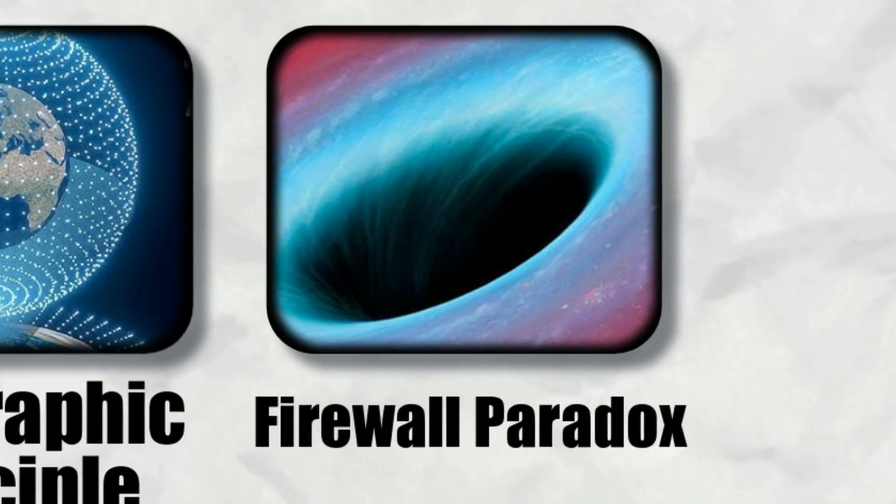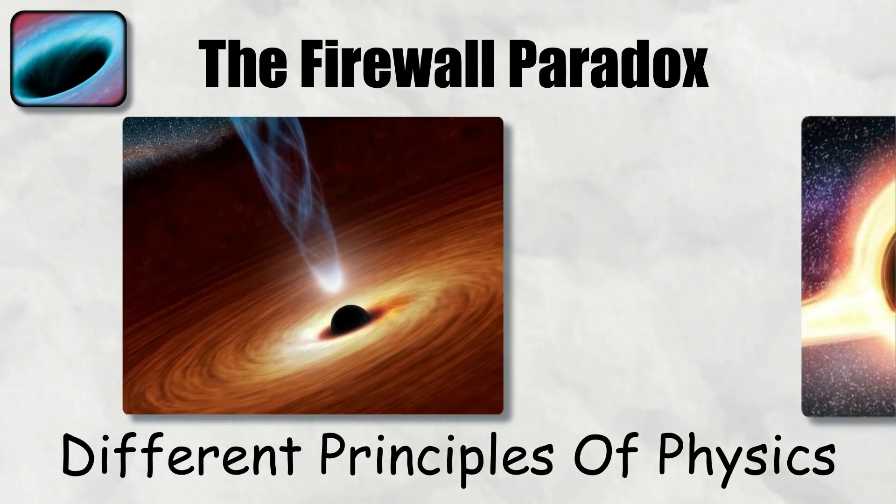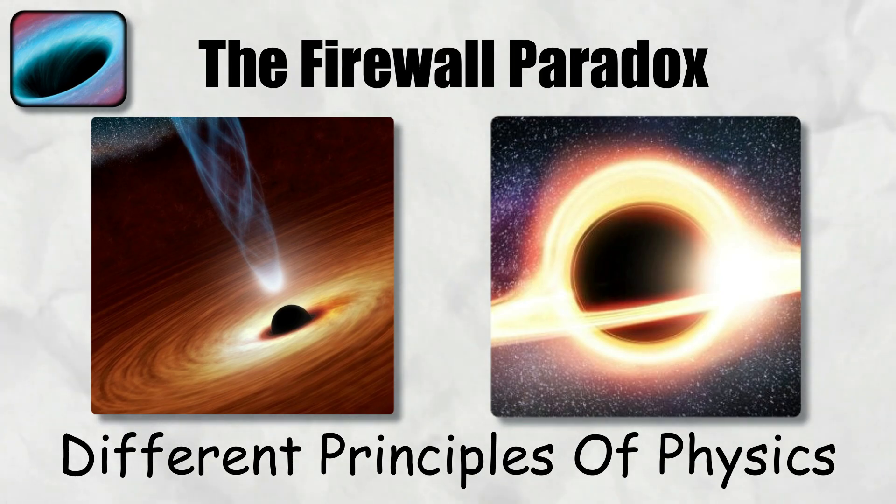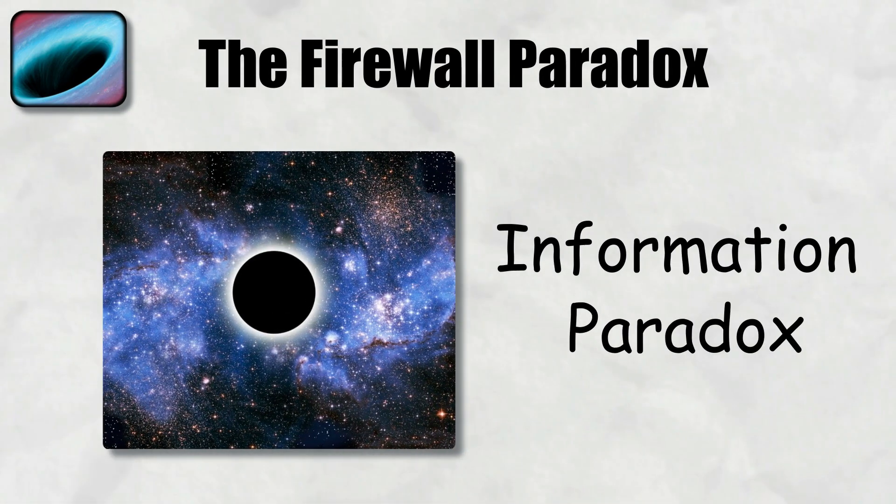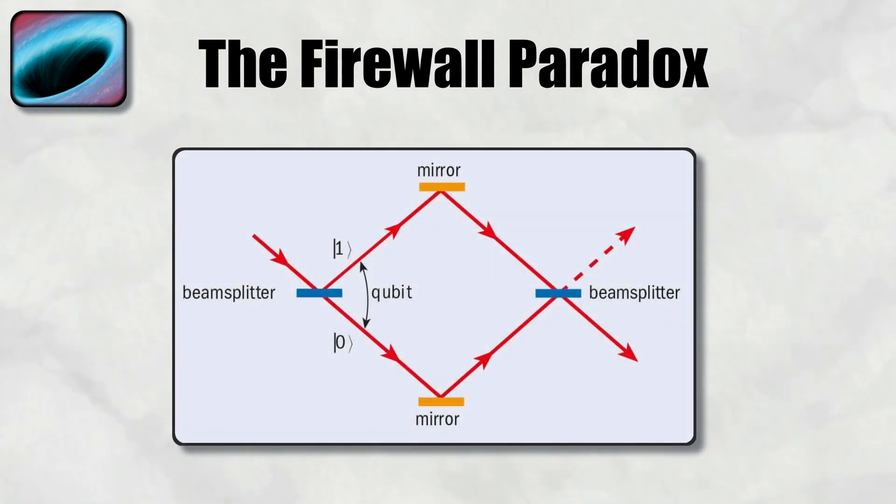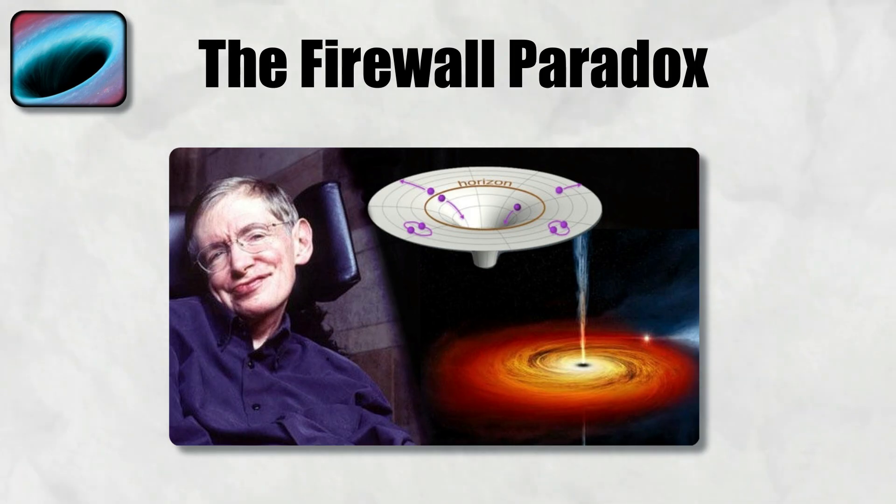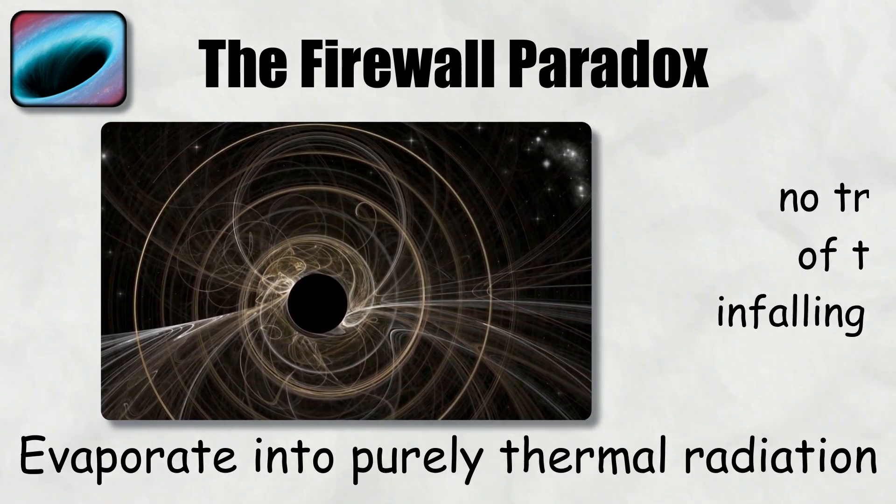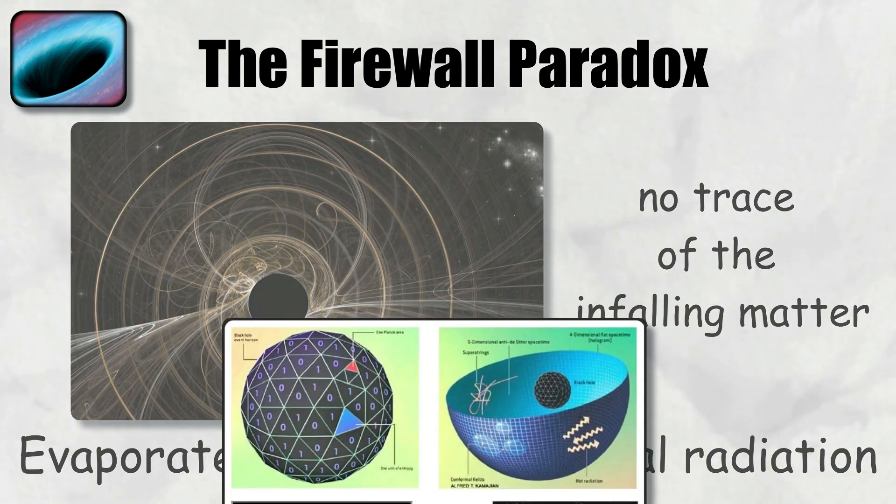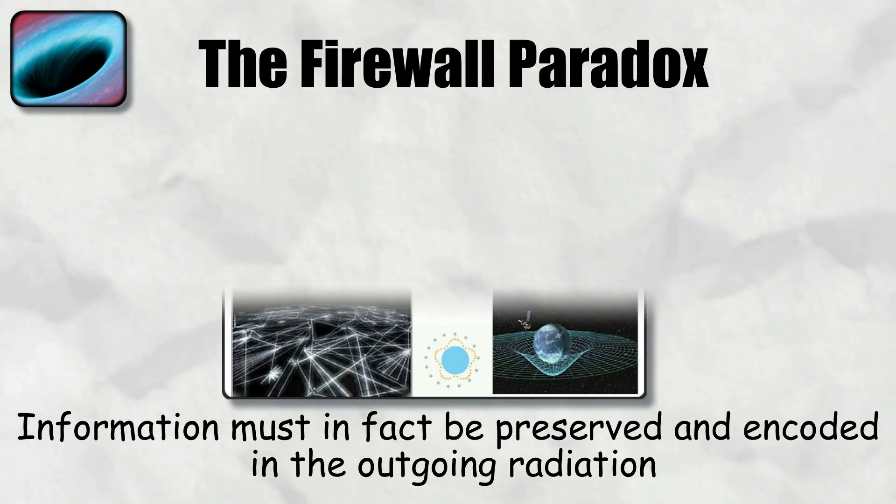Firewall paradox. The firewall paradox arises when different principles of physics are applied to black holes and appear to contradict each other. The starting point is the black hole information paradox. Quantum mechanics requires that information is never lost, while Hawking's original calculation suggested that black holes evaporate into purely thermal radiation with no trace of the infalling matter. The holographic principle and related ideas suggest that information must in fact be preserved and encoded in the outgoing radiation.